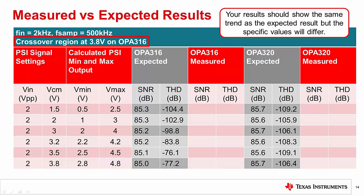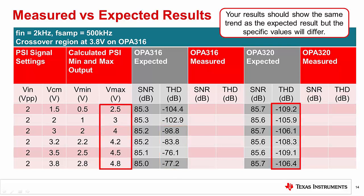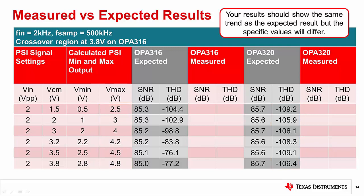The OPA316 crossover region happens at 3.8 volts, so we should see degradation above this voltage. Sure enough, the OPA316 THD degrades significantly for Vmax of 4 volts and greater. However, the OPA320 has good performance across all common mode voltages because it is a zero crossover device. Now you can run the experiment for the OPA320 and the OPA316. Your results should have the same trend as the expected results, but the specific value may differ somewhat. For example, you may see a THD of 100 dB for Vmax of 2.5 volts and 67 dB for Vmax of 4.8 volts.